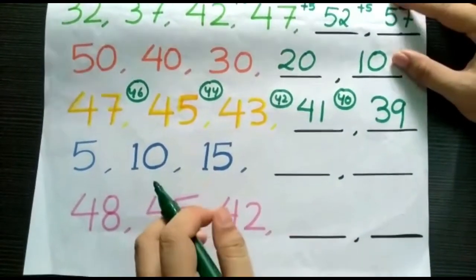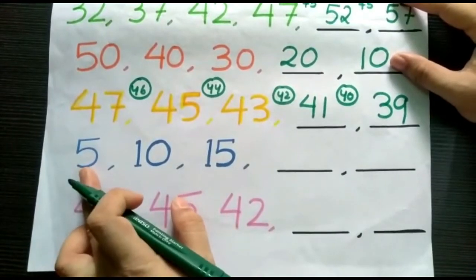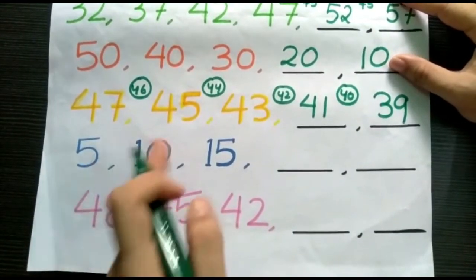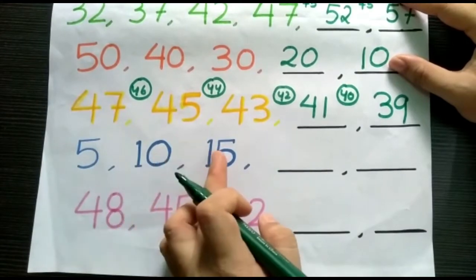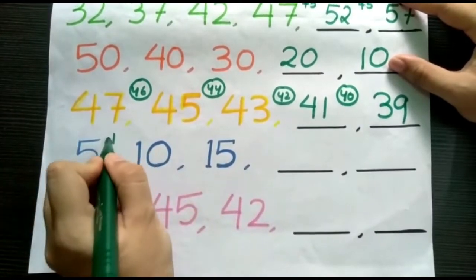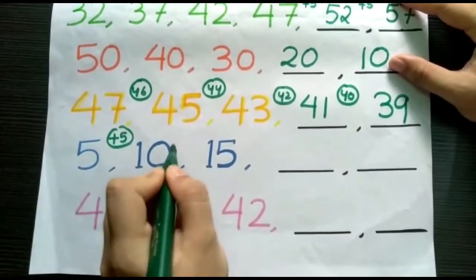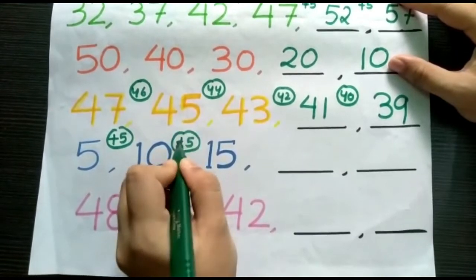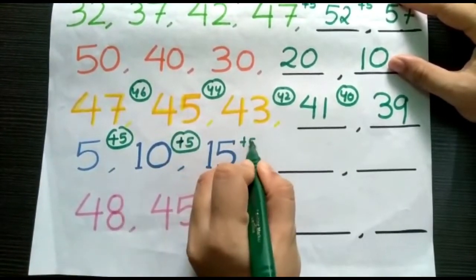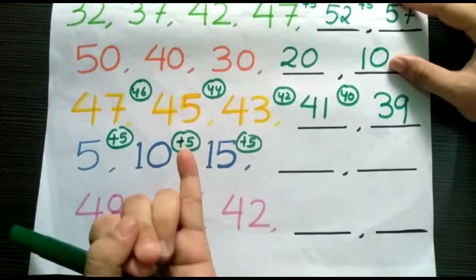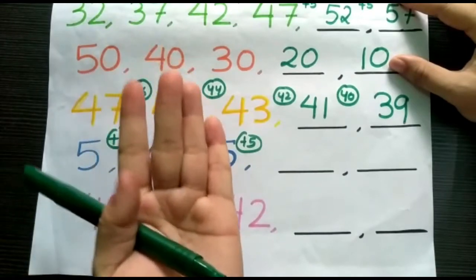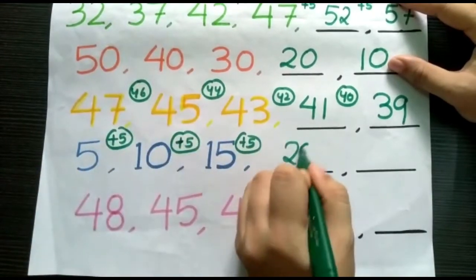Now, in the next example, the pattern is increasing by 5. 5, 10, 15. So, the difference is 5 times. So, every pattern is increasing by 5 times each. 15 plus 5 means 16, 17, 18, 19, 20. So, we will write here 20.